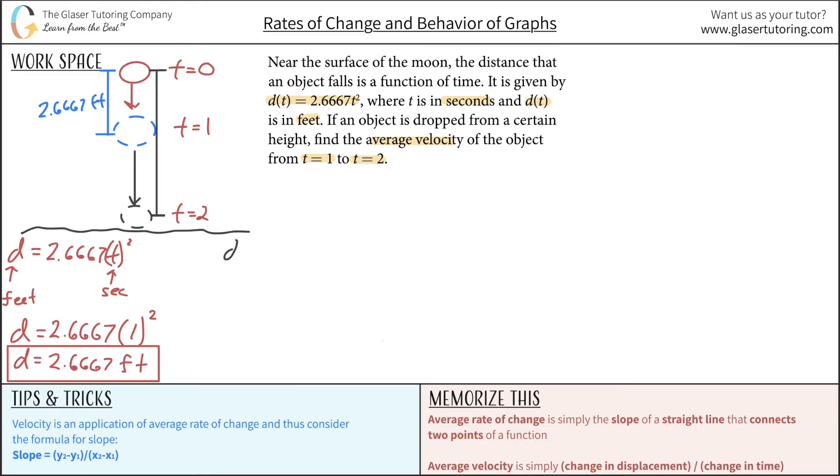So why don't we do that? We have the total distance covered would be equal to 2.6667 times the time that has elapsed squared. The distance now is going to be 2.6667 times 2 seconds squared. Two squared is four, and then multiply it by 2.6667. This becomes 10.6668 feet. We just calculated the distance traveled in two seconds - that black line that I drew is going to be 10.6668 feet.